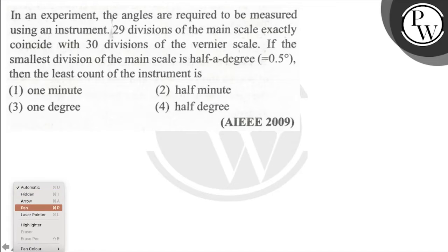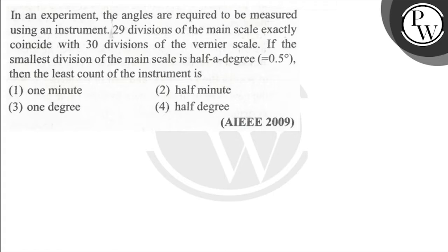Let's see the question. In an experiment, angles are required to measure using the instrument. 29 divisions of the main scale exactly coincide with 30 divisions of the Vernier scale. If the smallest division of the main scale is half a degree, then what is the least count?